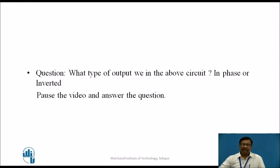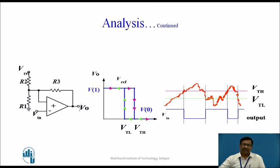The question is: what type of output do we get in the above circuit? The answer should be in terms of whether the output is in phase or inverted. Looking at the circuit — when the input signal goes positive and reaches the higher trigger point, the output goes to logic 0. When the signal comes down and reaches the lower trigger point, the output becomes high. So what we are getting here is an inverted output.